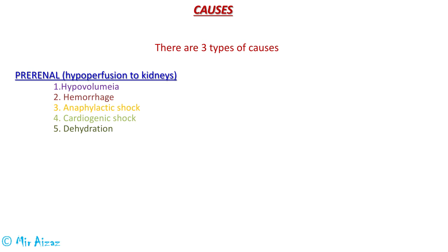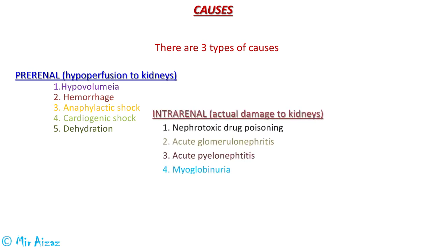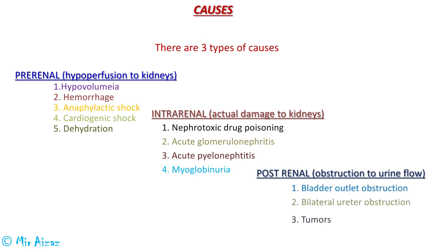Cardiogenic shock and dehydration are also pre-renal causes. The second is the intrarenal cause, which includes all those causes that damage the actual tissue of the kidneys, including nephrotoxic drug poisoning, acute glomerulonephritis, acute pyelonephritis, and myoglobinuria. Then there are the post-renal causes, which obstruct the flow of urine out of the kidneys and include bladder outlet obstruction, bilateral ureter obstruction, and tumors.